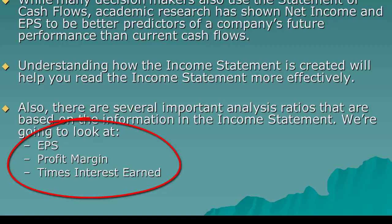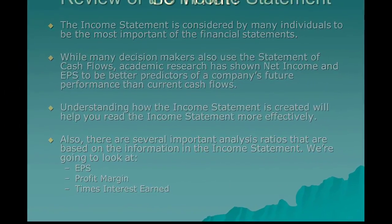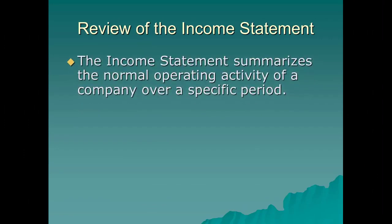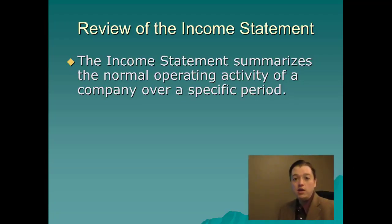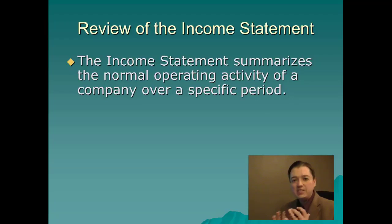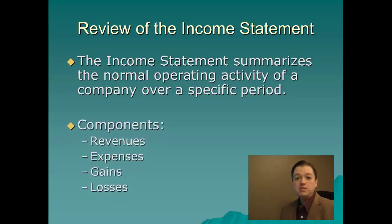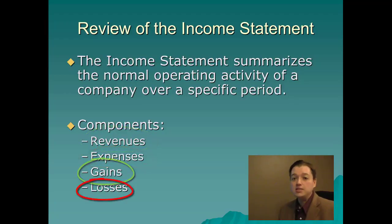Now that we've talked about why this is so important, let's talk about the income statement itself. The income statement summarizes all the normal operating activity of a company over a specific period of time. It keys into one of the key objectives of accounting — showing the assets of the firm, who has claim on those assets, and how those assets have changed. There are four specific pieces to the income statement: revenues, expenses, gains, and losses — basically a listing of what we've kept track of all year long.